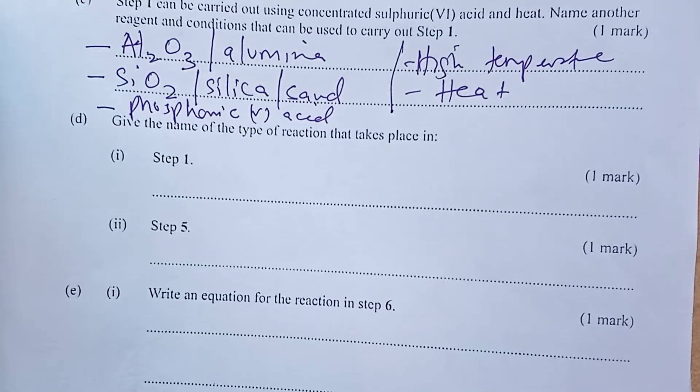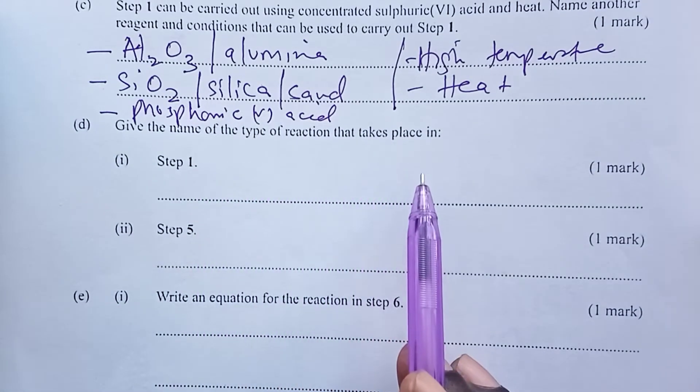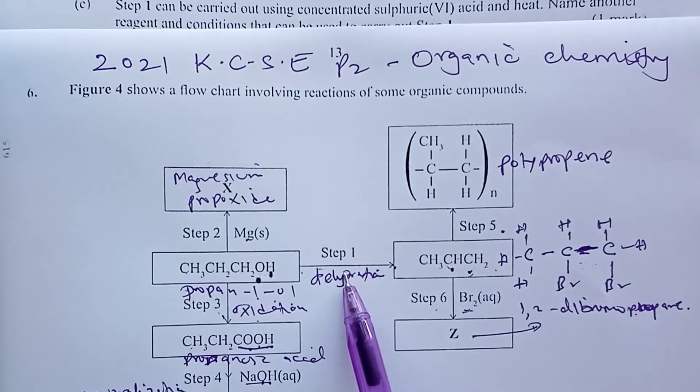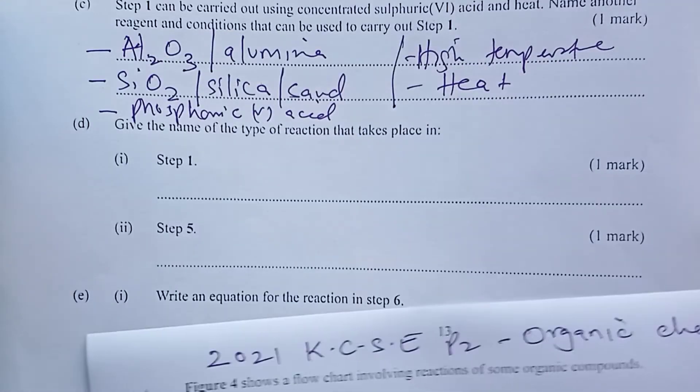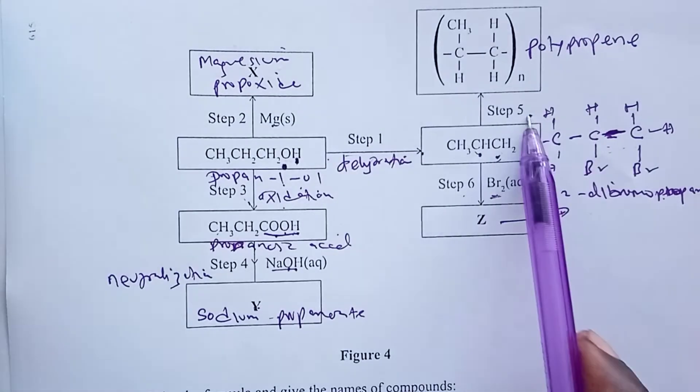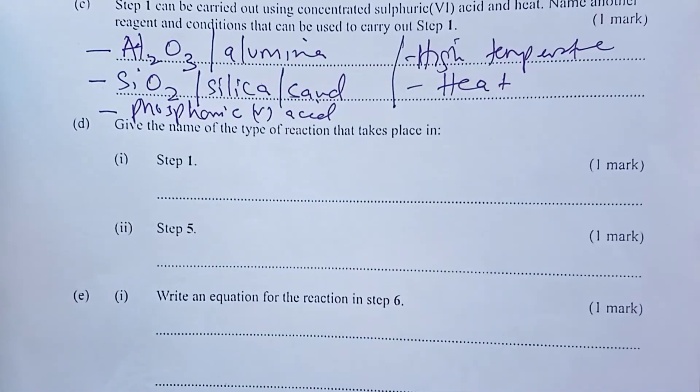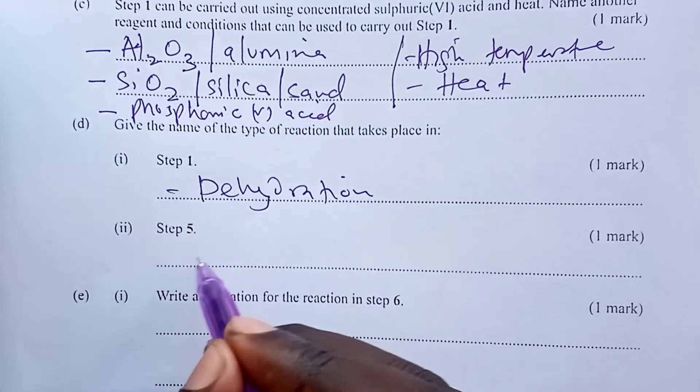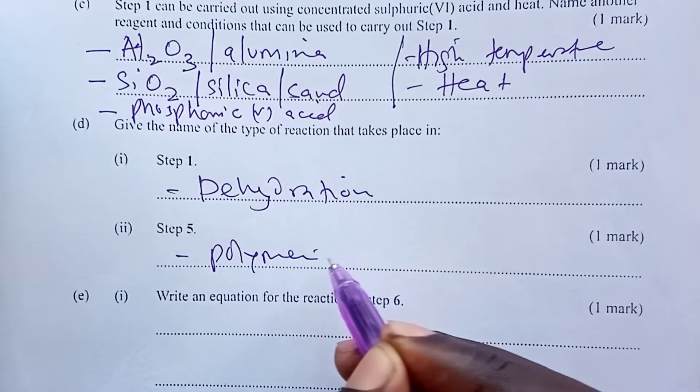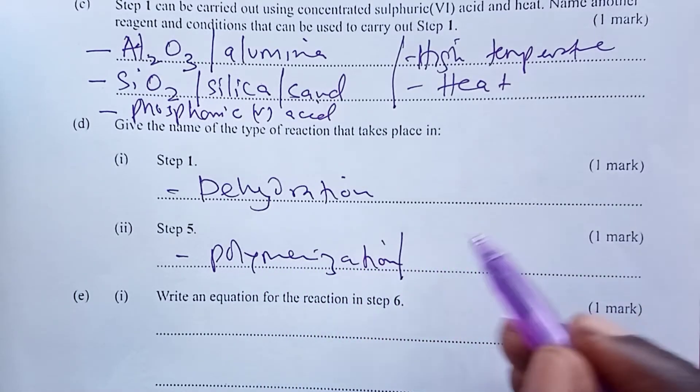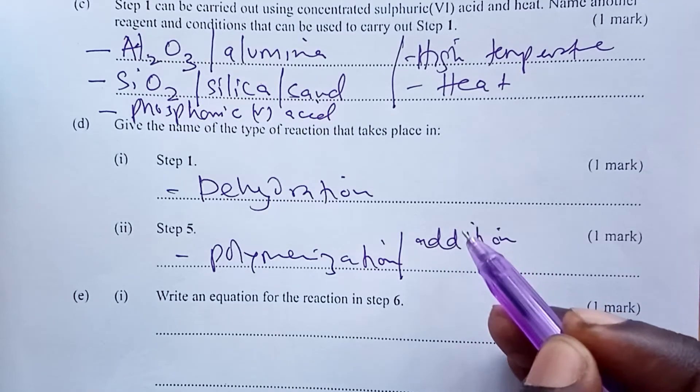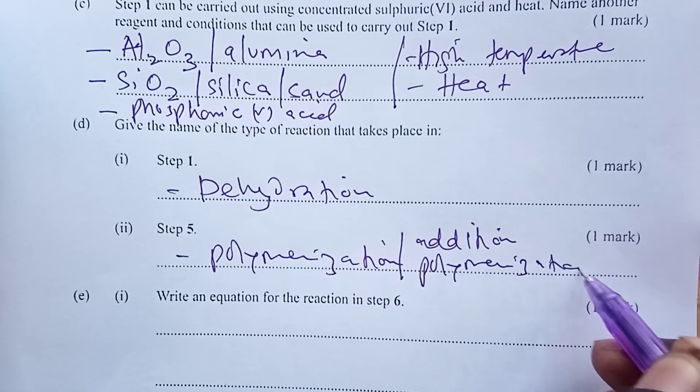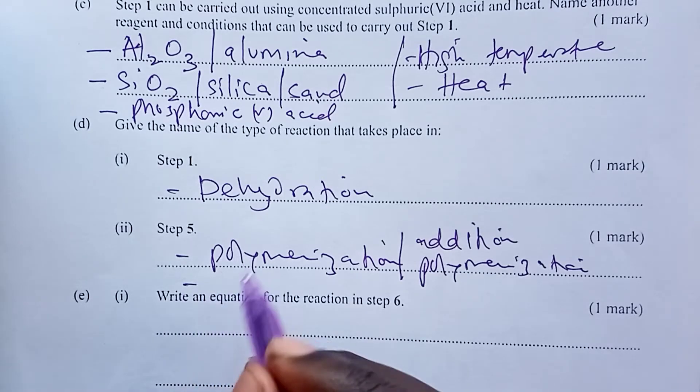Now, give the name of the type of reaction that takes place in step one. So step one, here we have mentioned, it is dehydration. What about step five? Step five, you have called it polymerization. So you answer your questions very well because you have studied your scheme very well. So we have dehydration there. Here we have polymerization, which can also be called addition. To be specific, you can tell us addition polymerization, and we can also call it a self-addition reaction.